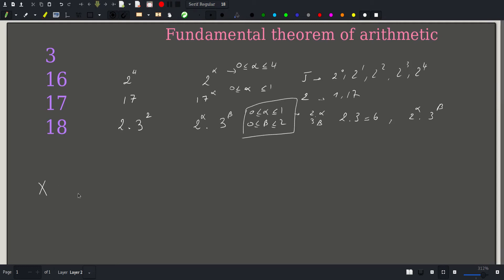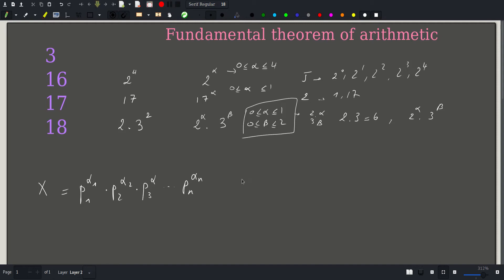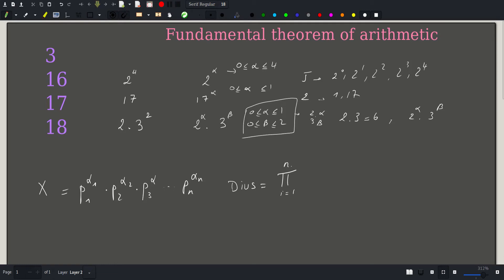In general, any number x equal to p1 raised to alpha 1 times p2 raised to alpha 2, and so on up to pn raised to alpha n, has a number of divisors equal to the product — represented with pi as we represent the sum with sigma — from i equals 1 to n of (alpha i plus 1). We add a plus 1 to account for the 0, so for 16 with exponent 4, we get 5 divisors since 5 equals 4 plus 1.